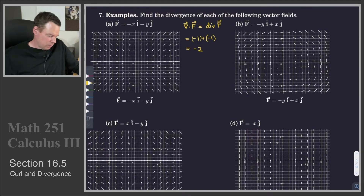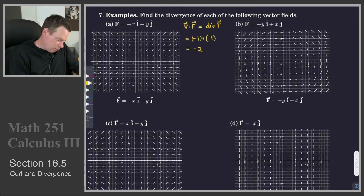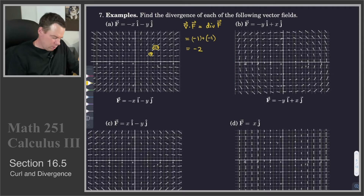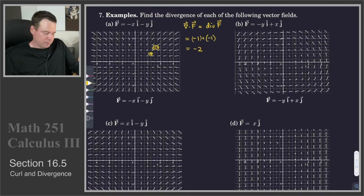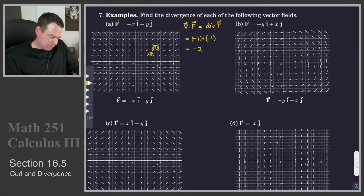This value of negative 2 is telling us that this vector field is a compressing vector field. There's some compression involved. The idea is if we've got some blob — thinking of it maybe as gas — as it moves through the vector field it's compressing, and so that's what that divergence is telling us.